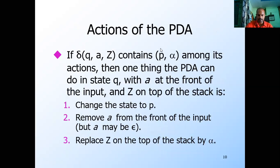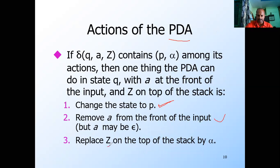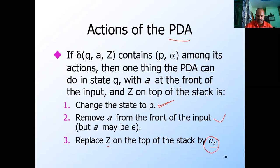What happens in the pushdown automata transition function: it changes the state or remains in the same state, consumes the input symbol, and replaces the stack top Z with α. If α is epsilon, that is a pop operation. If α is a set of symbols, that is a push operation.